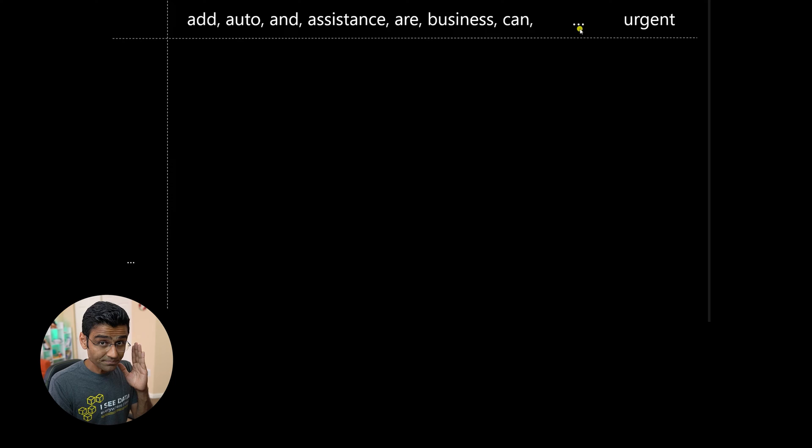And then you take your actual text that you want to convert into a vector. So let's say this is my email. Hey Pranav, can you add auto, whatever.